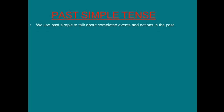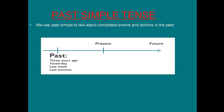Now our topic: past simple tense. We use past simple tense to talk about completed events and actions in the past. Biz past simple tense'i nerede kullanıyoruz? Geçmişte tamamlanmış olaylar ve durumlar için kullanıyoruz — yani bu geçmişte olup bitmiş demektir.